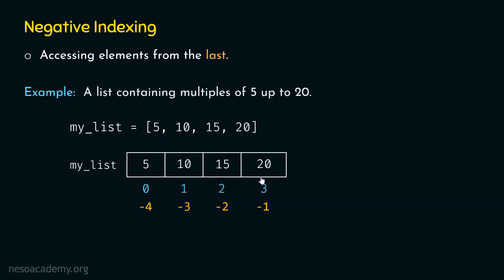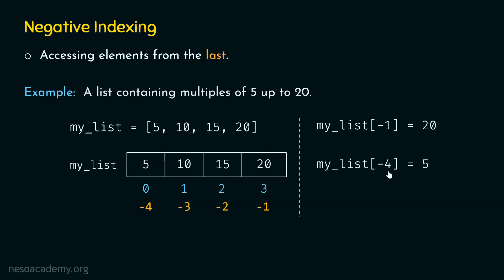Let's say we are interested in accessing the last element, element 20, through its negative index. We write myList[-1] to access element 20. If we want to access the first element, element 5, we need to specify -4 within square brackets — so myList[-4] gives us element 5.